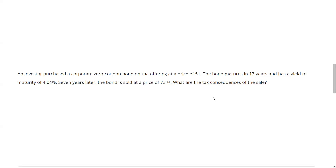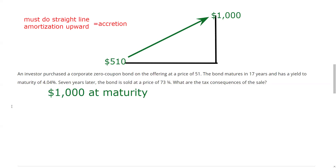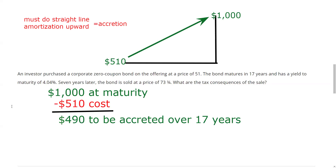The bond matures in 17 years. If I bought this bond at 51 and held it to maturity, I'd have no gain or loss because I would have adjusted the price upward each year. But the question says seven years later I sell the bond for 73 and three-quarters — what are the tax consequences? I need to do straight-line amortization upward — accretion — to find my adjusted cost basis. I paid $510; I get back $1,000 at maturity, so $490 is the amount I have to accrete.